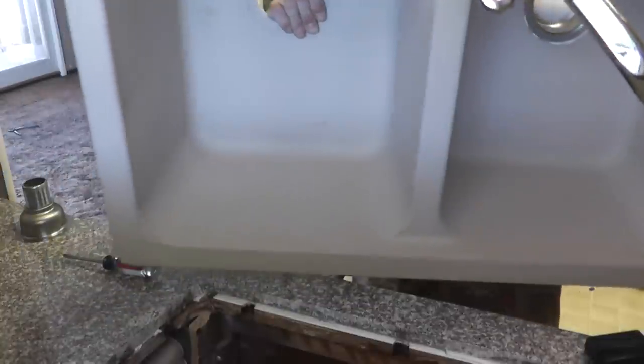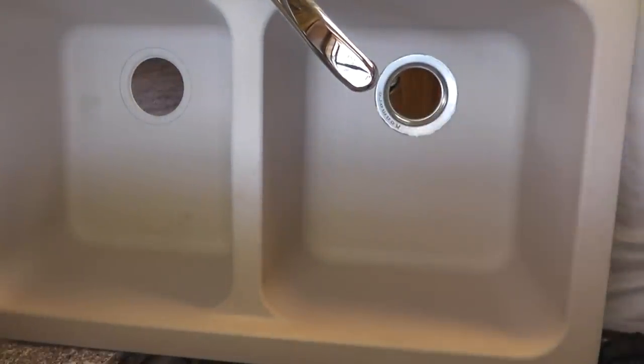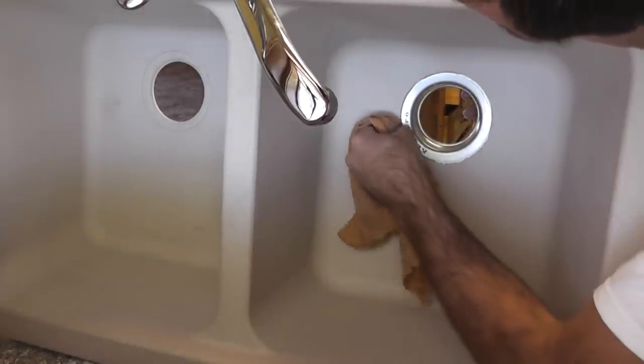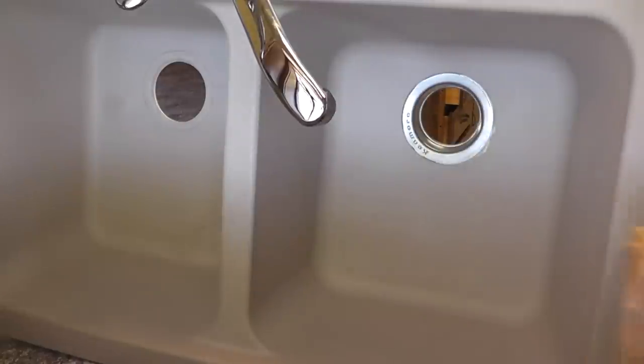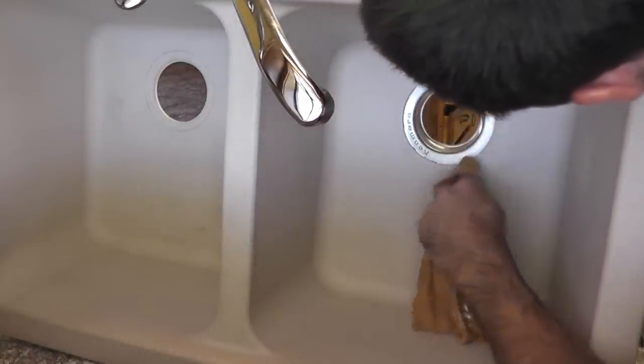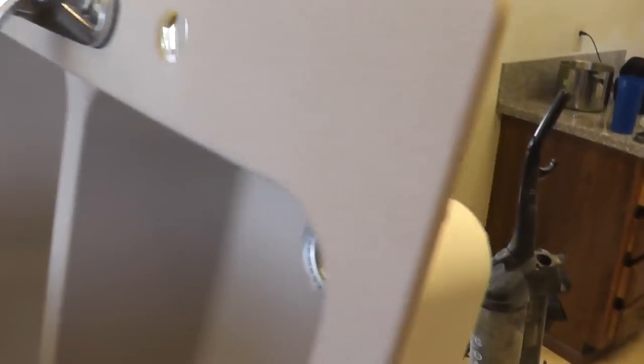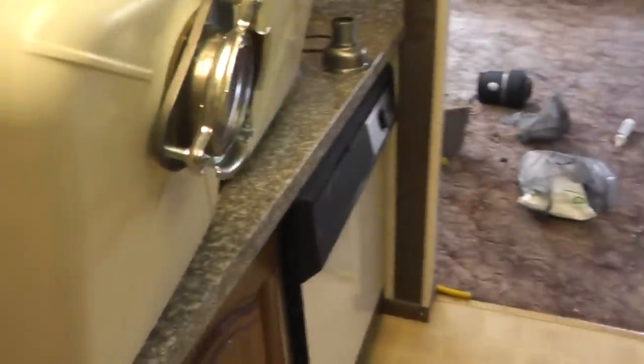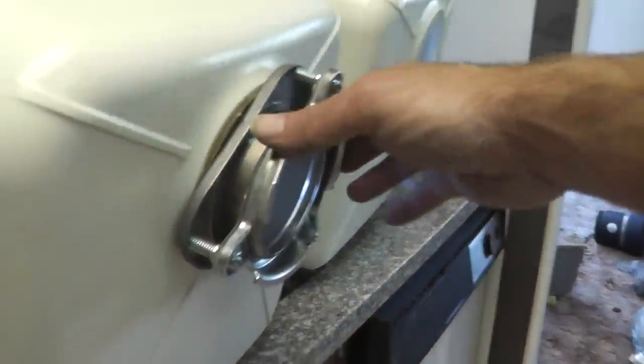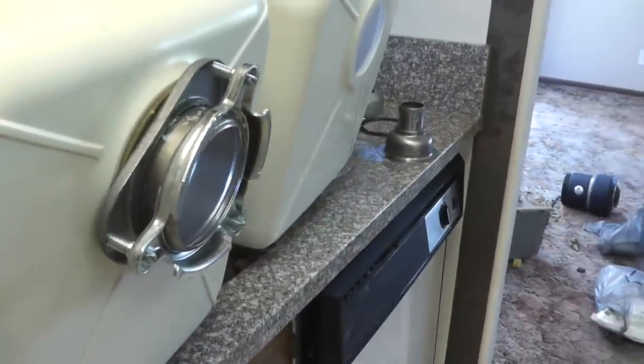And before the sealant dries, I'll wipe off the excess here with a damp cloth. And that is how to remove and or install a garbage disposal sink strainer. If you're interested in how to remove the garbage disposal from this mounting strainer, you can see that information here.